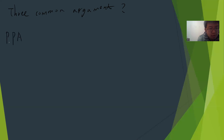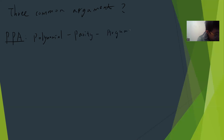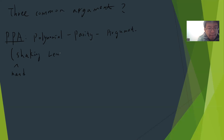The first one is called PPA. PPA is called the polynomial parity argument. Basically this is also called the handshaking lemma. The idea is: you are given a graph G which is undirected.